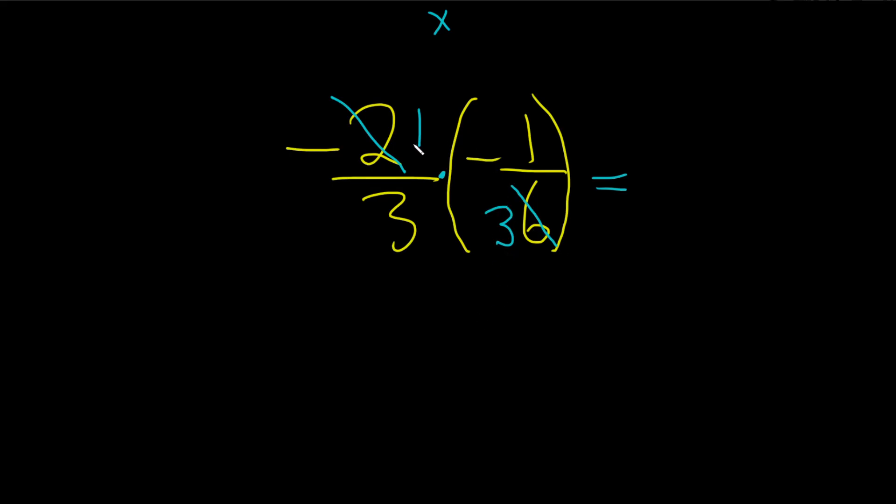And now you multiply straight across. 1 times 1 is 1, 3 times 3 is 9. And then the answer is positive because negative and negative is positive.